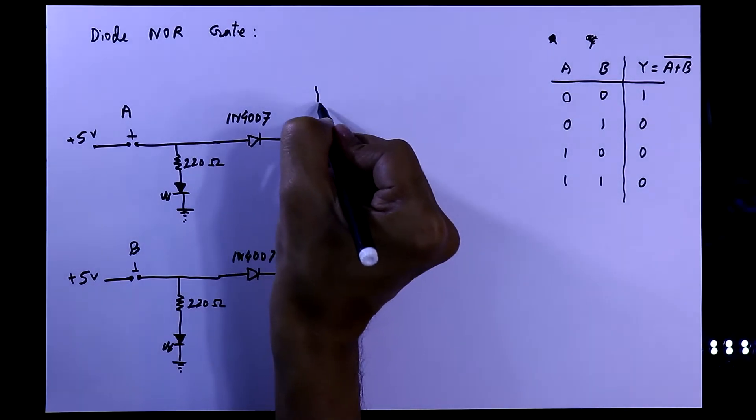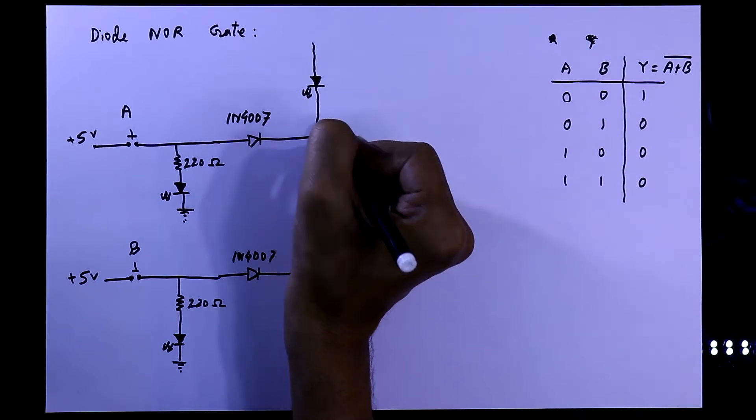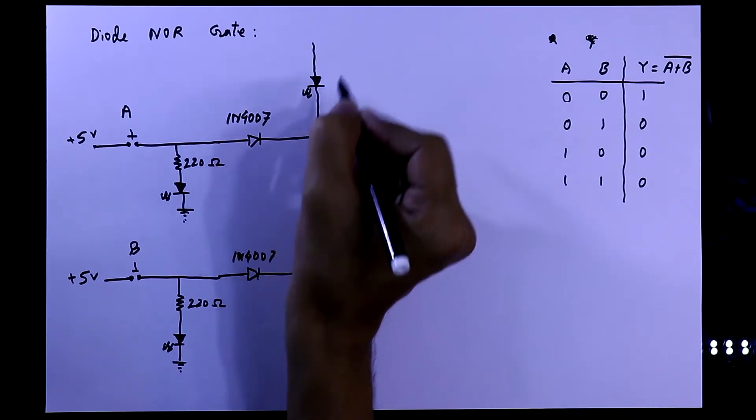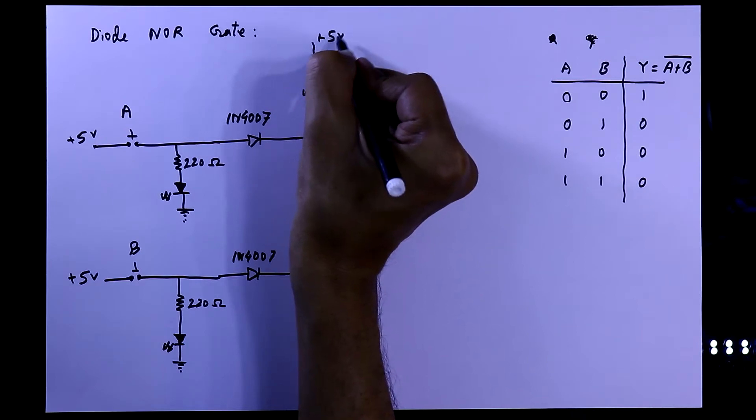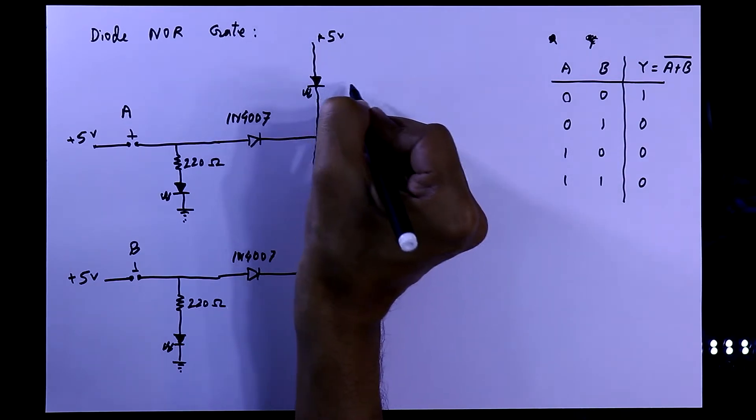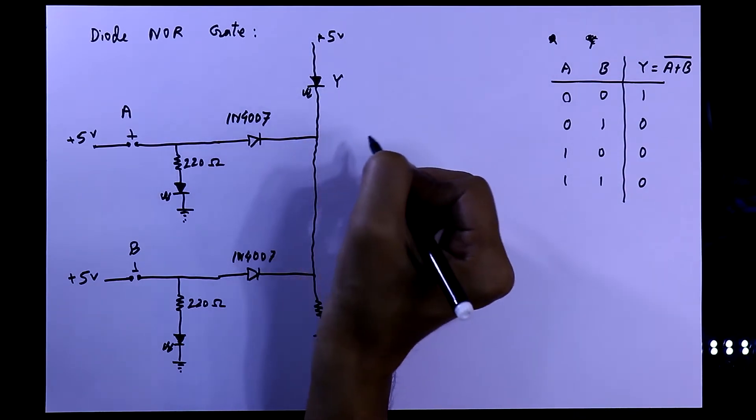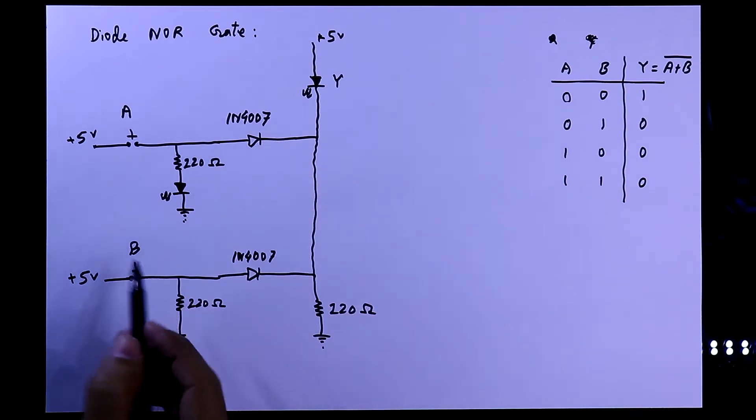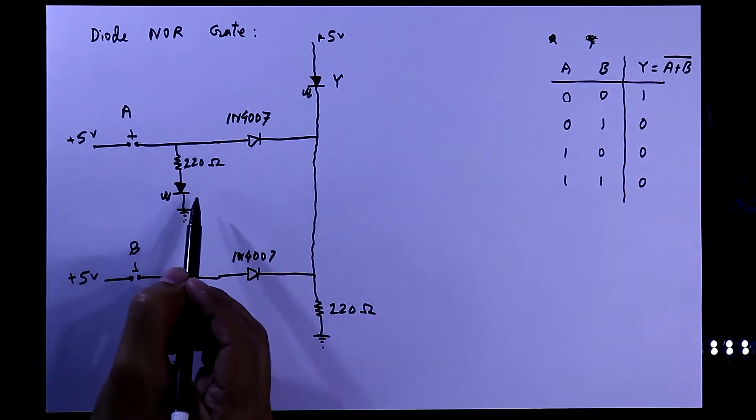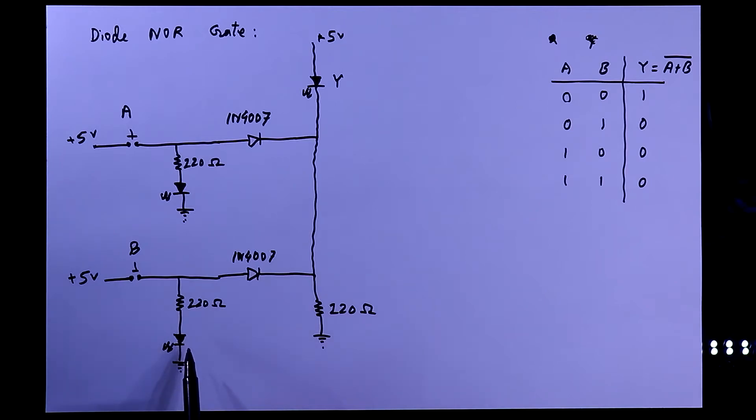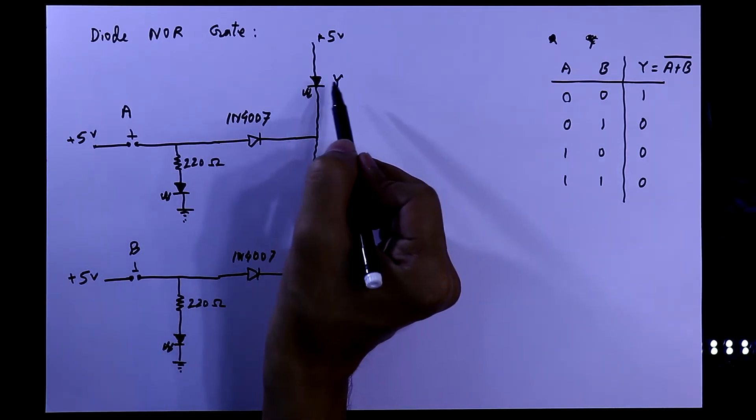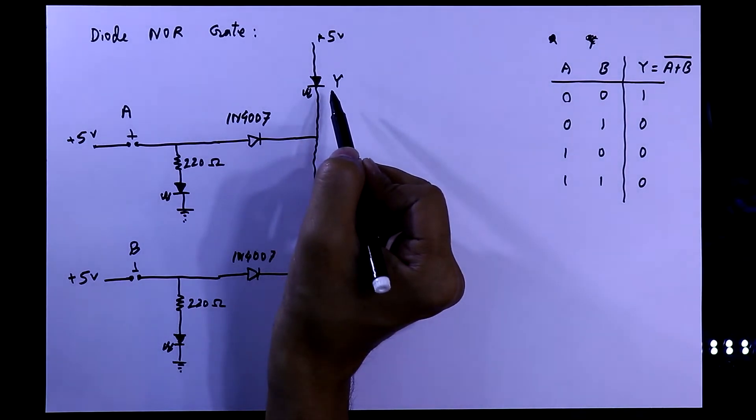In this point we will connect an LED. Negative pin of the LED is connected and with the positive pin will connect plus 5 volt. So this is the output of the gate. If A is on then this LED will glow. For B this will glow and if the output is active then this LED will glow.